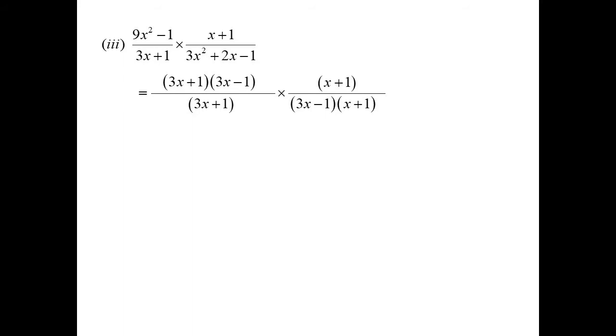So now the x plus 1 with the x plus 1, the 3x plus 1 with the 3x plus 1. Oh, look, everything cancels. And we're left with 1. So that's just 1. Isn't that interesting? It doesn't matter what you substitute in for x there. You'll always come up with the answer 1.